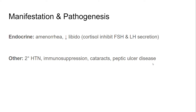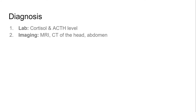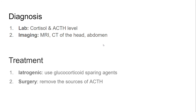In terms of diagnosis and treatment, we can diagnose Cushing syndrome by measuring serum and urine cortisol and ACTH levels. Once elevated cortisol is confirmed, we can do an MRI or CT of the head and abdomen, especially the adrenal gland, to identify the source of cortisol or ACTH — whether it is from the pituitary or the adrenal gland. Treatment depends on the etiology: for iatrogenic Cushing syndrome, we use glucocorticoid-sparing agents — other immunosuppressants that are not glucocorticoids. For primary and secondary causes, we can remove the source, such as the adrenal gland or the pituitary adenoma.